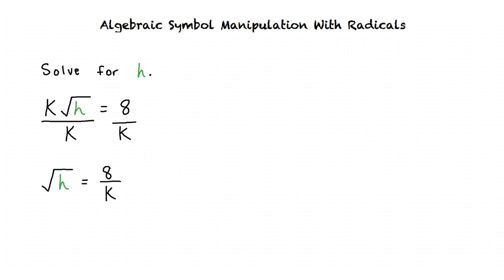In order to get rid of the square root, we must do the inverse. The inverse of taking the square root is squaring the value. We cannot only square one side of the equation, however, as this would change the value on one side. Instead, we square both sides of the equation in order to keep both sides equivalent.